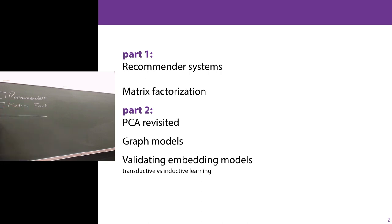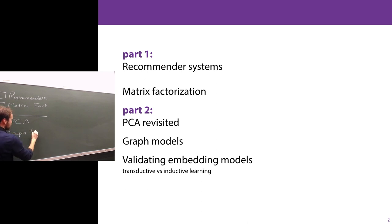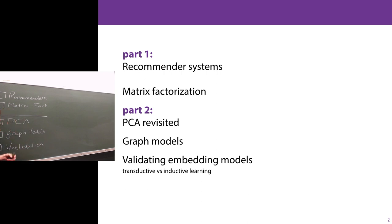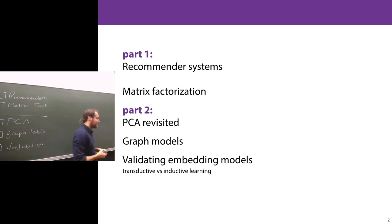After the break, we will revisit principal component analysis, which can be seen as a kind of matrix model as well. Then, very briefly, we will look into graph models, which can be seen as a kind of generalization of this recommender system idea. And then we'll close up with some important but brief notes about validation, because as we saw with the sequences lecture last time — last Monday — if we deviate from the basic recipe of machine learning, we should also reevaluate how we evaluate and validate our model, to make sure we're not making any mistakes.